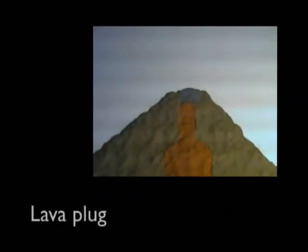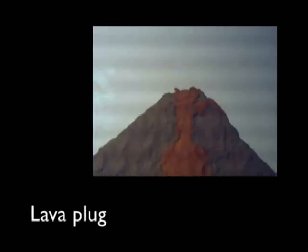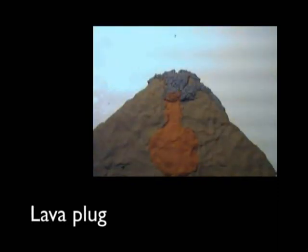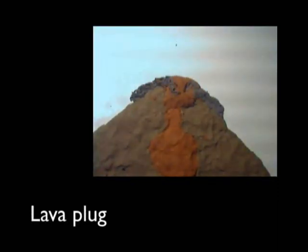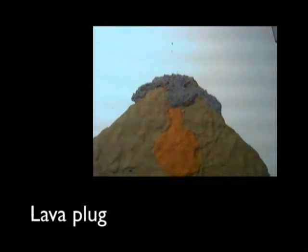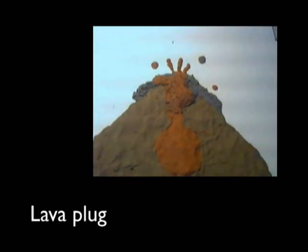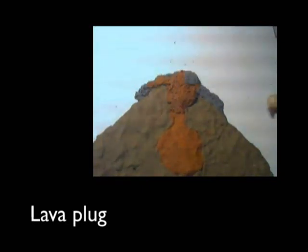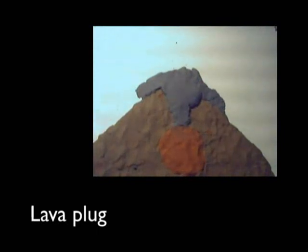After most eruptions involving thick lava, magma will settle back into the vent. This magma will cool and harden to form a plug. Over time, pressure will slowly build up underneath this and prepare the volcano for another eruption.